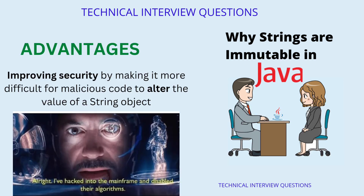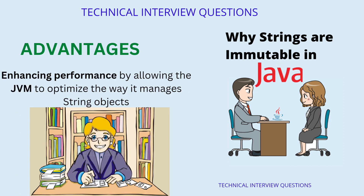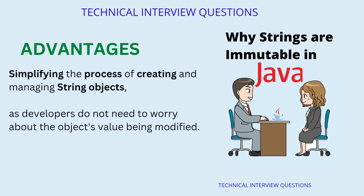Benefits: Improving security by making it more difficult for malicious code to alter the value of a string object; enhancing performance by allowing the JVM to optimize the way it manages string objects; providing a more intuitive way of working with strings, as it is clear that the value of a string object cannot be changed after it is created; and simplifying the process of creating and managing string objects, as developers do not need to worry about the object's value being modified.